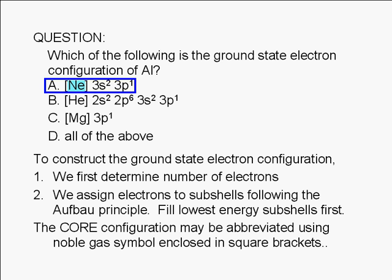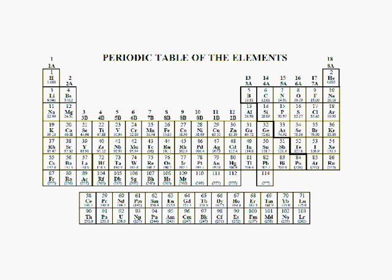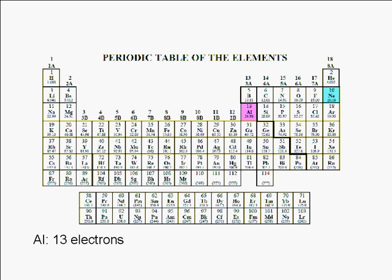But how do we come up with the answer if this were not a multiple choice question? Let's refer to the periodic table. Here's aluminum. It's in the third row or third period. The noble gas immediately preceding aluminum is the noble gas in the second row, neon. We can see that aluminum has an atomic number of 13. An aluminum atom has 13 electrons. And that neon has an atomic number of 10. A neon atom has 10 electrons.